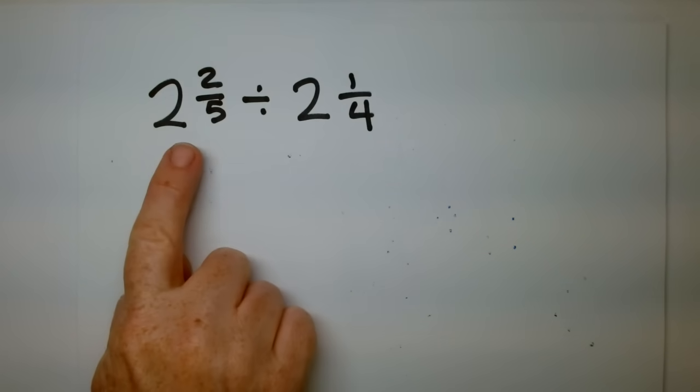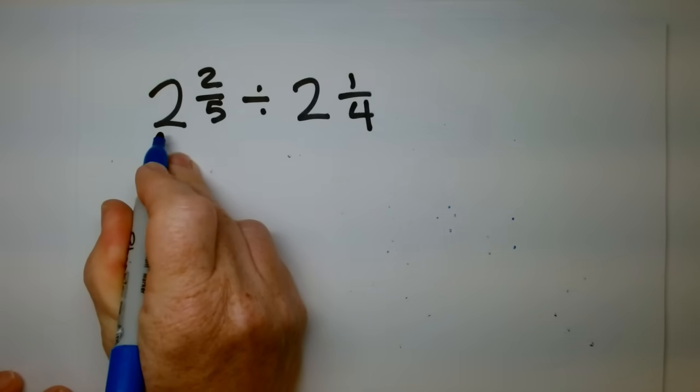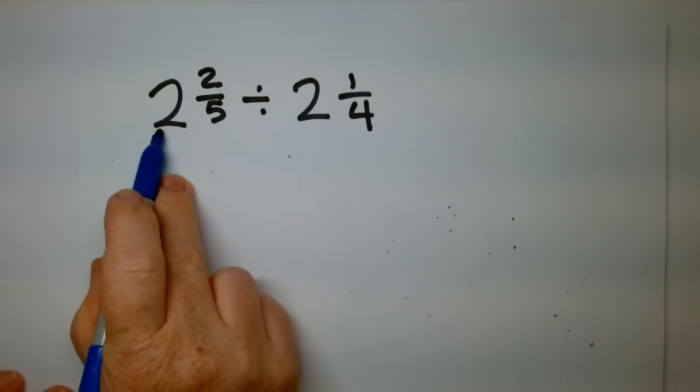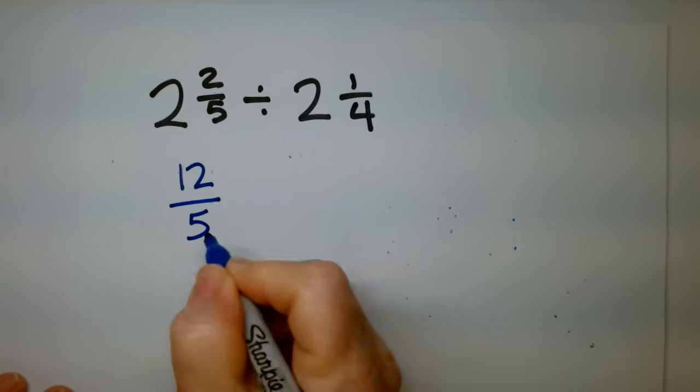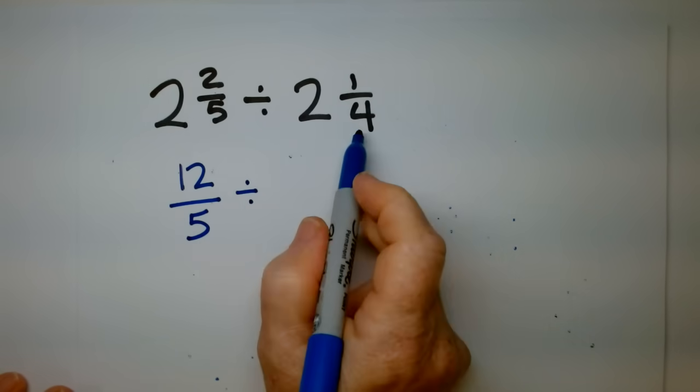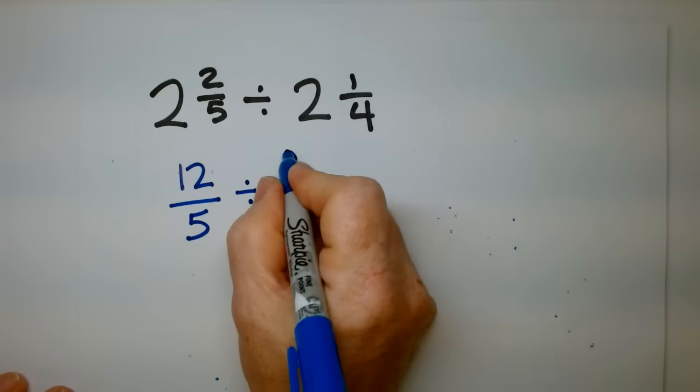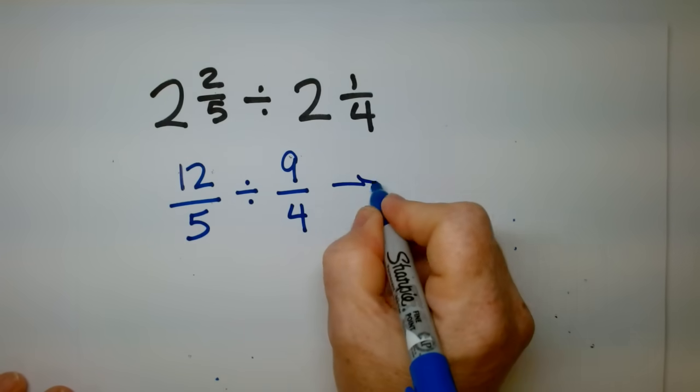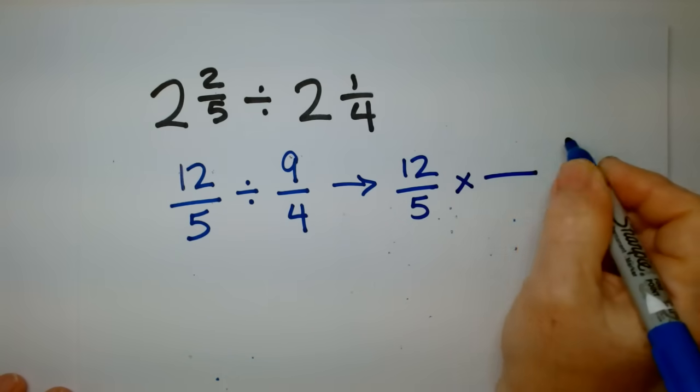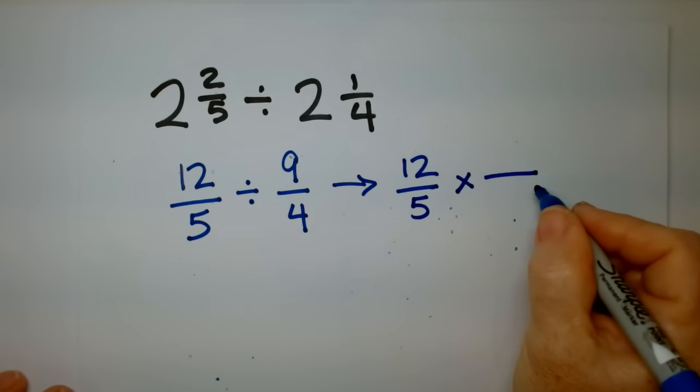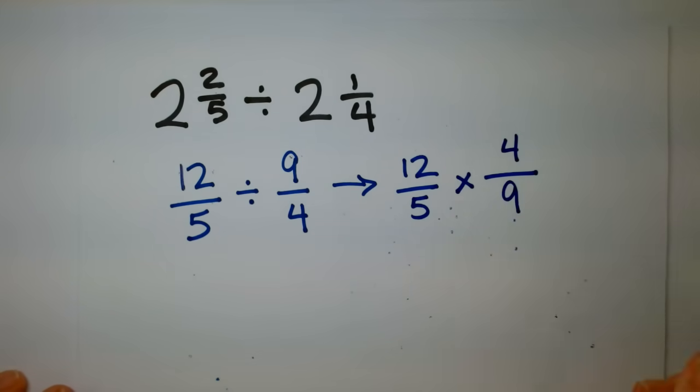So turn this one into an improper fraction. That's 2 over 5. 2 times 5 is, shout it out. Yeah, 2 times 5 is 10. Plus 2. 12 over 5. Good. Divided by 2 times 4 is 8. Plus 1 is 9. Excellent. That will get turned into 12 over 5 times, what do I put here? Can you shout it out so I can read your lips? Good. Good. Good. I'm seeing 4 ninths. Excellent. Good.